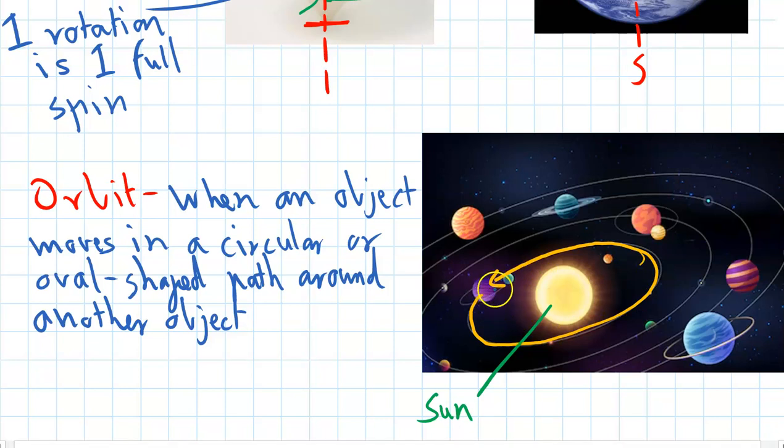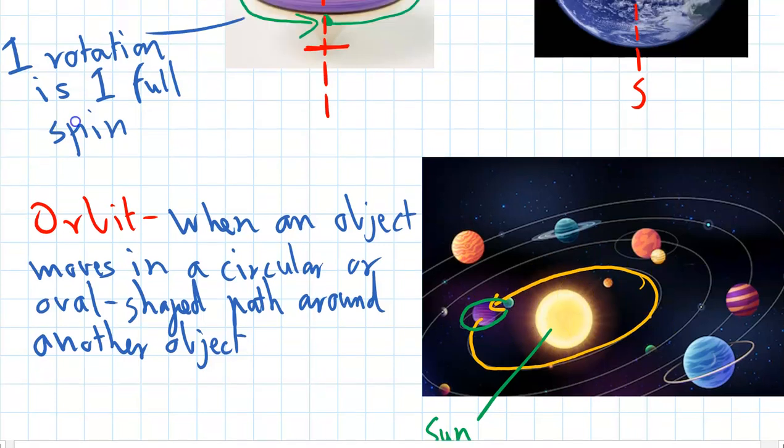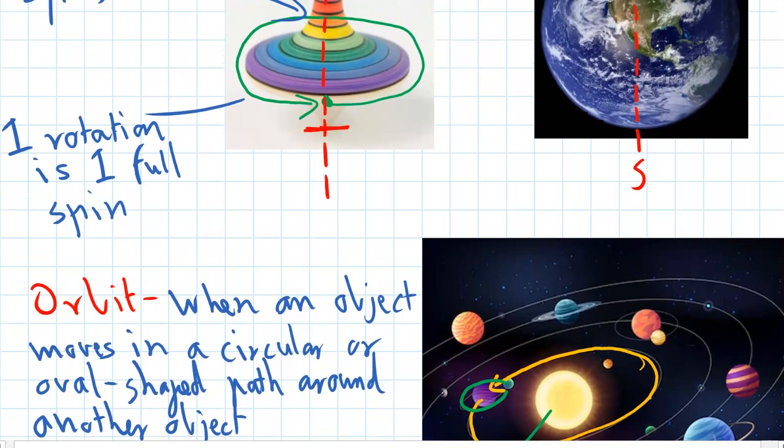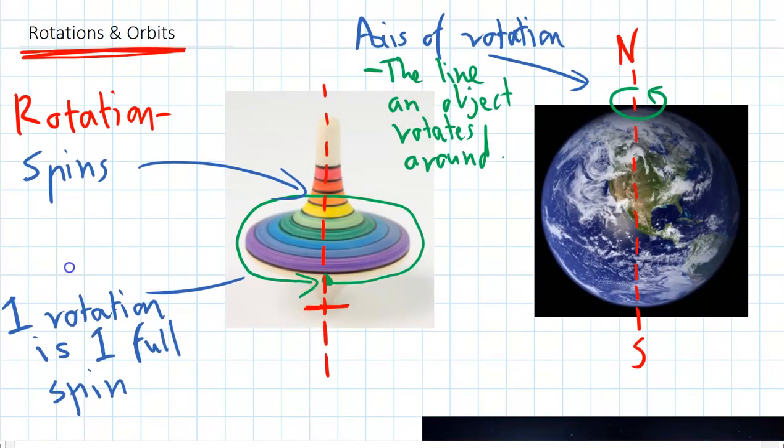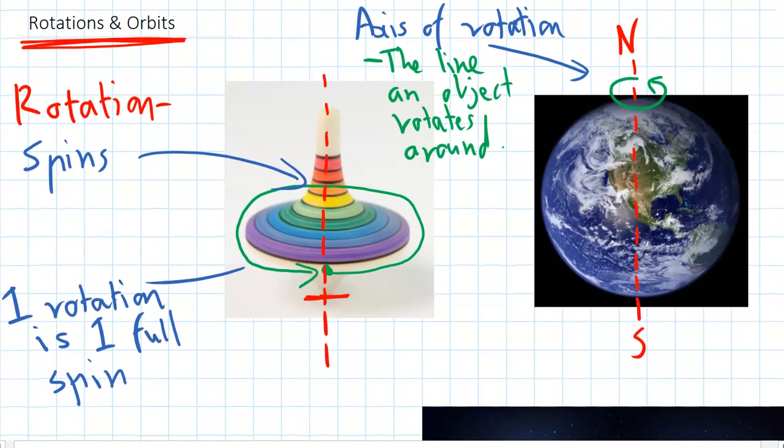And actually moons orbit planets as well. So you can see here, this purple planet has a moon, and its moon is orbiting the planet, while the planet is orbiting the Sun. And that's exactly what happens with our moon on Earth. Okay, so there are the basic terms we need to know before we start talking about more planets in the solar system.